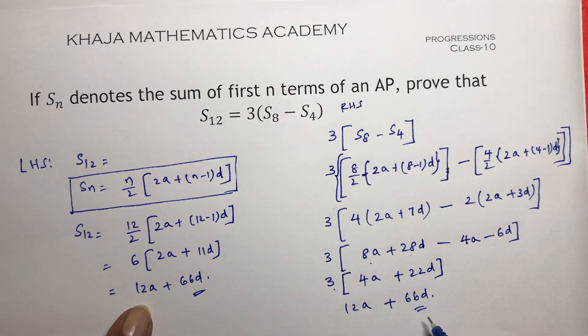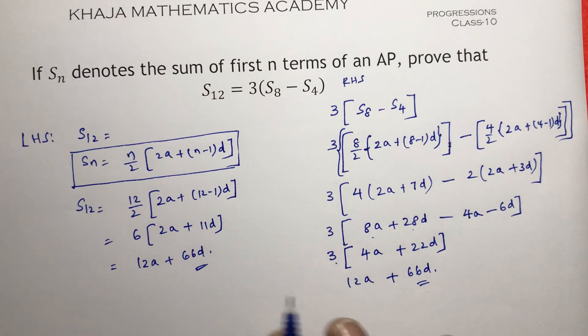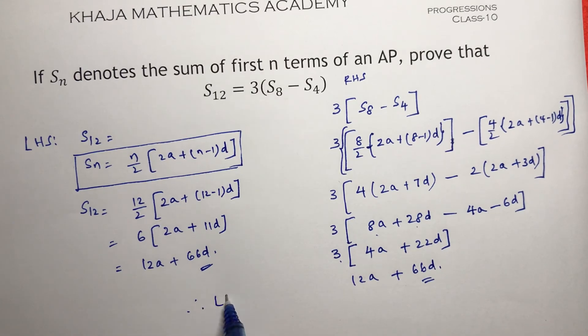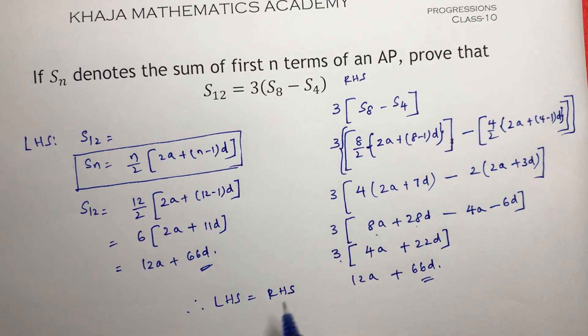So if I see LHS and RHS, both are equal. Therefore, LHS equals RHS.